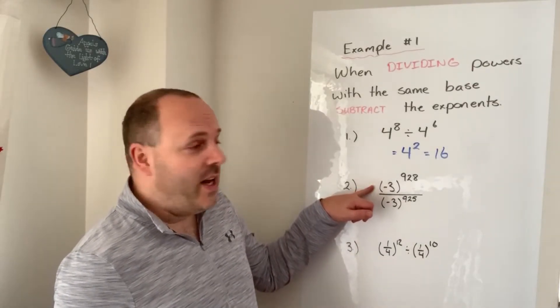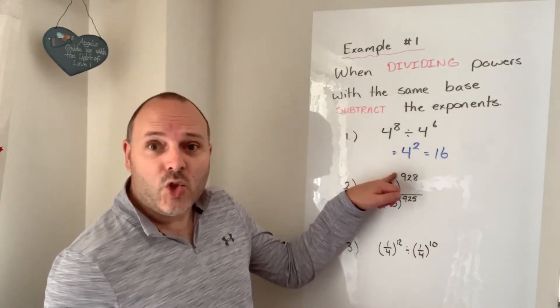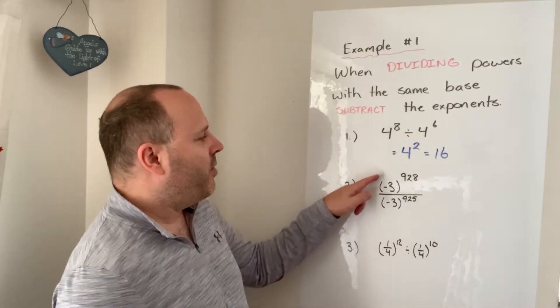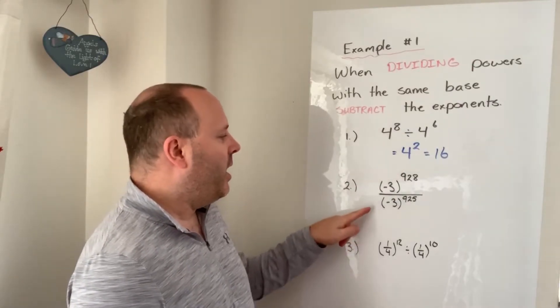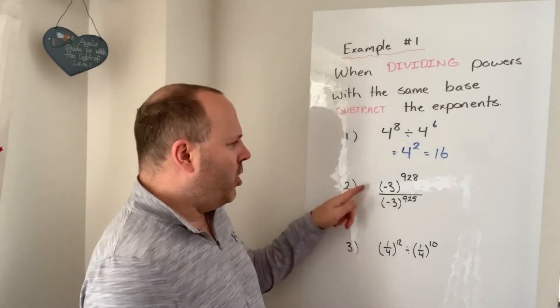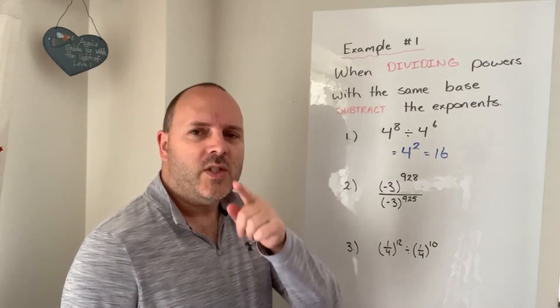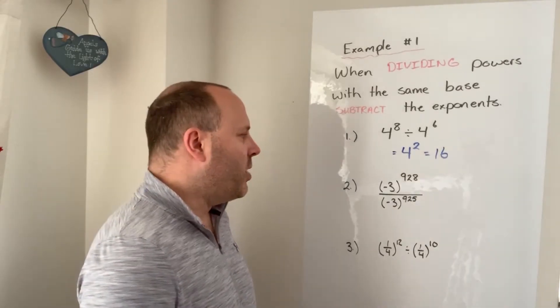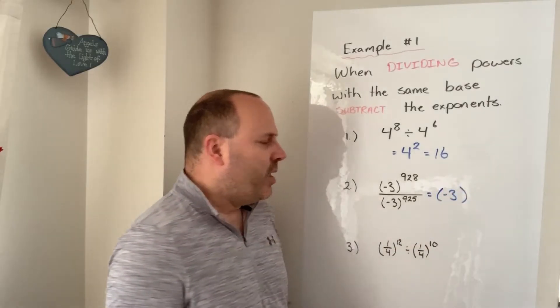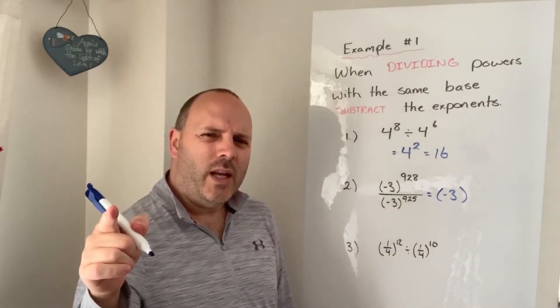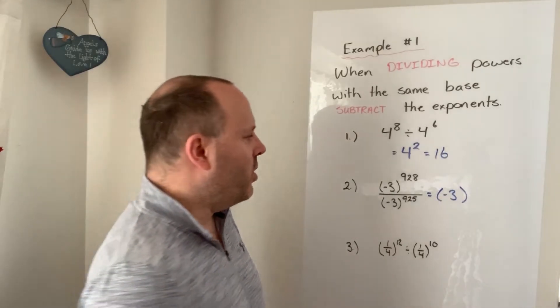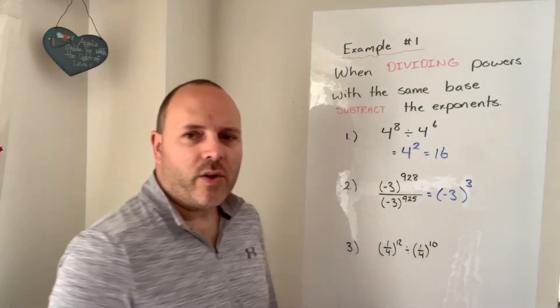All right, second example, negative 3 to the power of 928. Holy cow, I can't calculate that out. That's a huge number, but negative 3 to the power of 928 divided by negative 3 to the power of 925. Huge number divided by huge number. Exponents, same base, subtract the exponents. So that's going to be negative 3 to the exponent, 928, take away 925. There's only three difference between those. So it's going to be negative 3 to the power of 3.